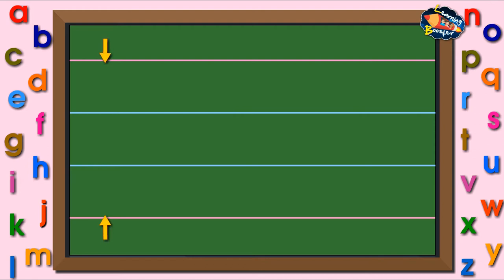Look at the two red and two blue lines. Each has a name: tall line, baseline, baseline, and tail line.